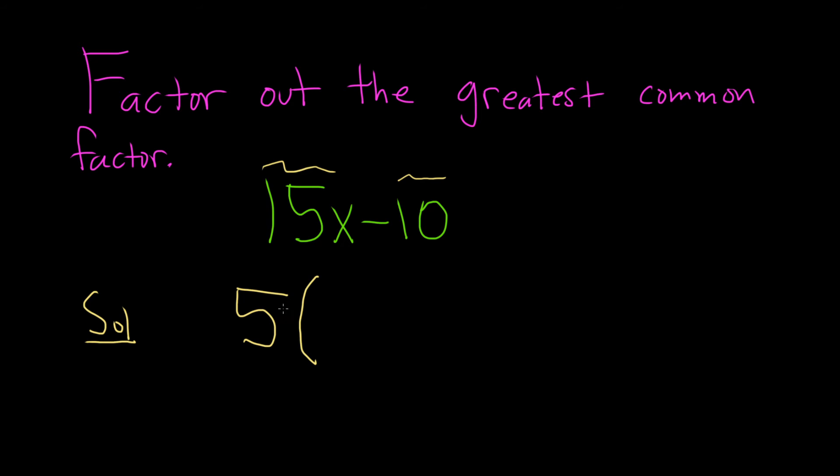The question you ask yourself is what do you multiply by 5 in order to get 15x? Well, 3x. And then you check mentally: 5 times 3x is actually equal to 15x.